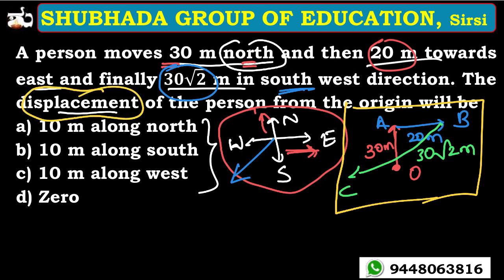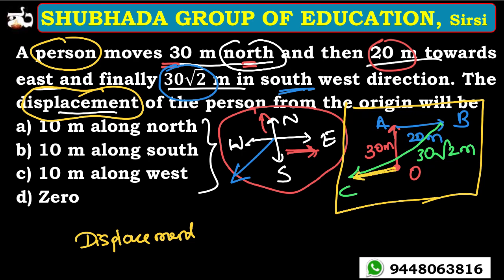Displacement is the shortest distance between the initial and final point — it is the straight line or shortest path between the initial and final position of the particle. So the displacement must be equal to OC. Displacement is a vector quantity.